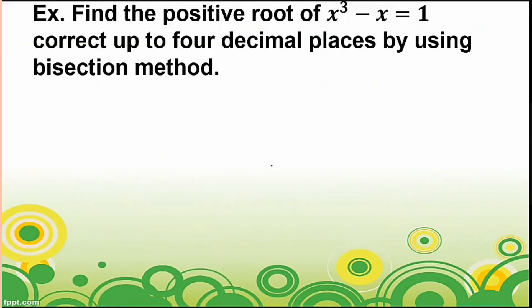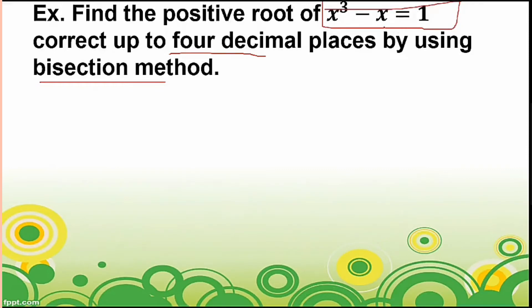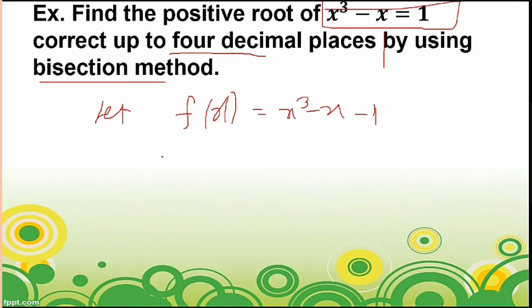Here is the first example: find the positive root of x³ − x = 1, correct to four decimal places, using the bisection method. Since we are finding an approximation, we correct it to four decimal places. Our first task is to write a function from the given equation: let f(x) = x³ − x − 1.